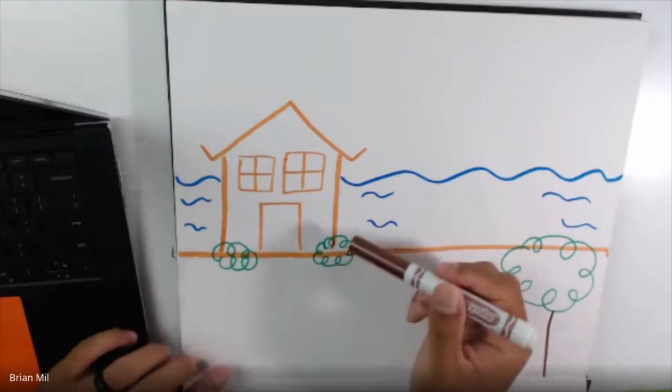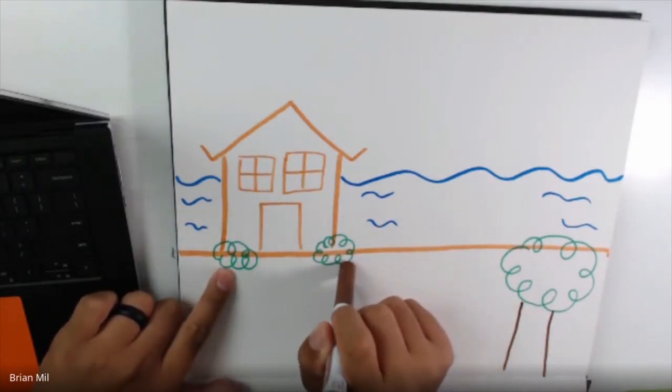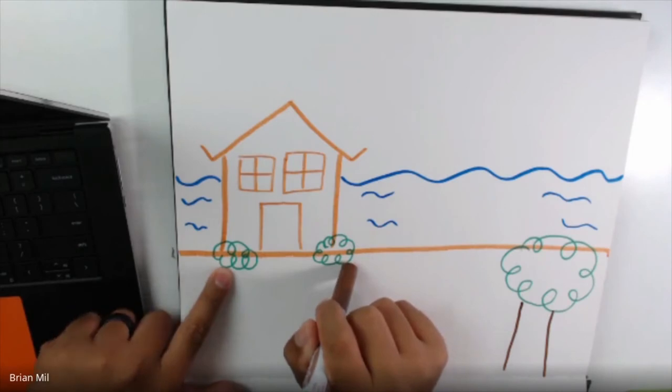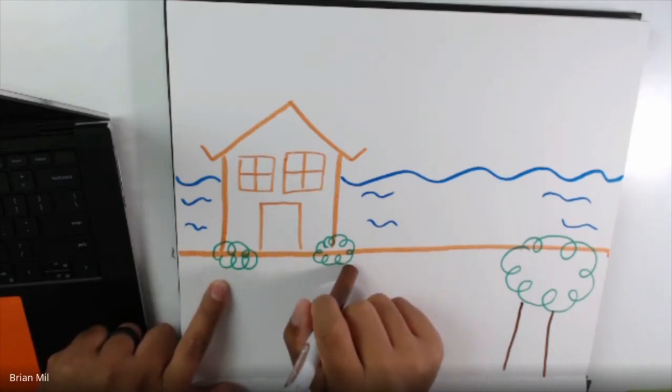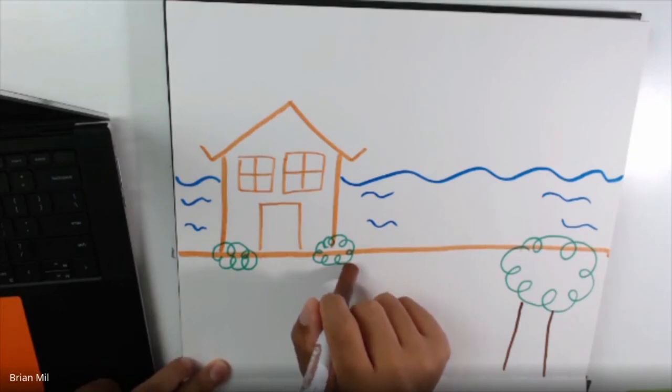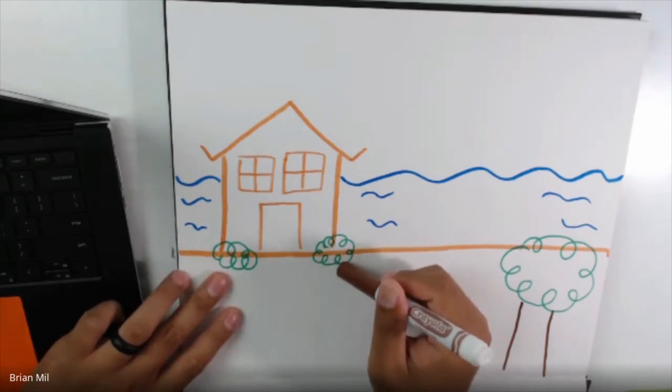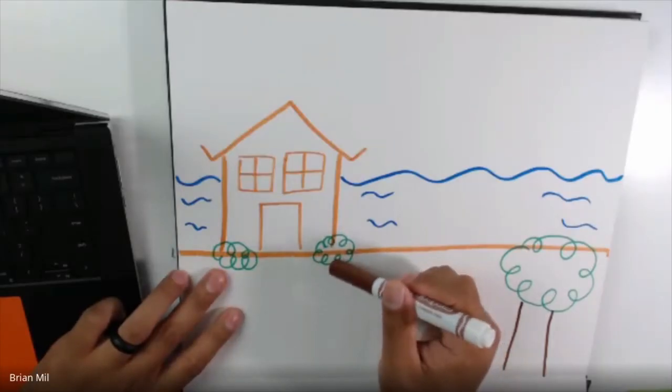But if I made curly lines right here, what are these? What could these be right beside a house? Anyone want to volunteer and tell me what these could be? What could these be? Anyone that has their hand raised? Maybe someone that's not on my screen. Maybe another teacher can help me if there's someone I'm not seeing. All right, Vinny, you want to tell us what you see? Vinny, what could these be? Bushes. Good job, buddy.